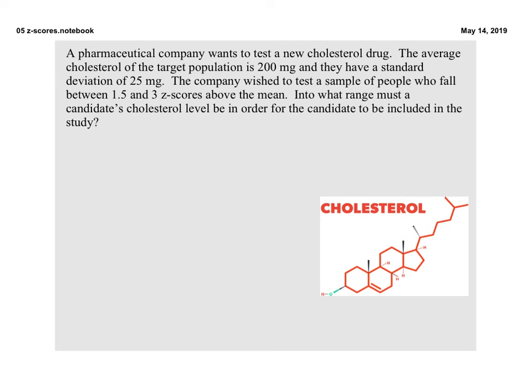Okay, our last example. We have a company that wants to test a new cholesterol drug. The average cholesterol of a target population is 200 mg and they have a standard deviation of 25. The company wished to test a sample of people who fall between 1.5 and 3 z-scores from the mean. Now we're looking at above the mean. Into what range must a candidate's cholesterol level be in order for a candidate to be included in the study?